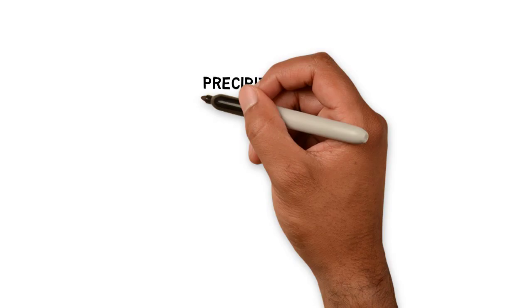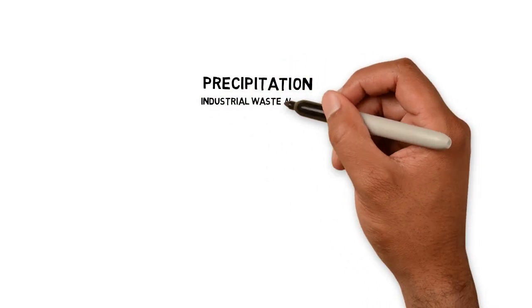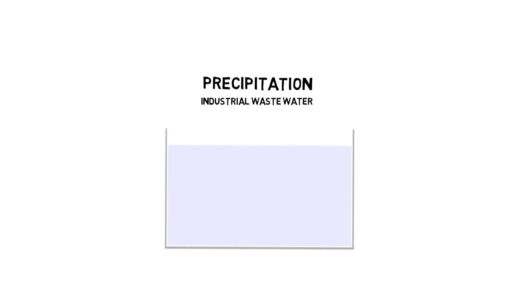Very similar works precipitation in industrial waste waters. This water tank with industrial waste water looks completely clear. However, this tank contains toxic ionic metals that are dissolved in the water.